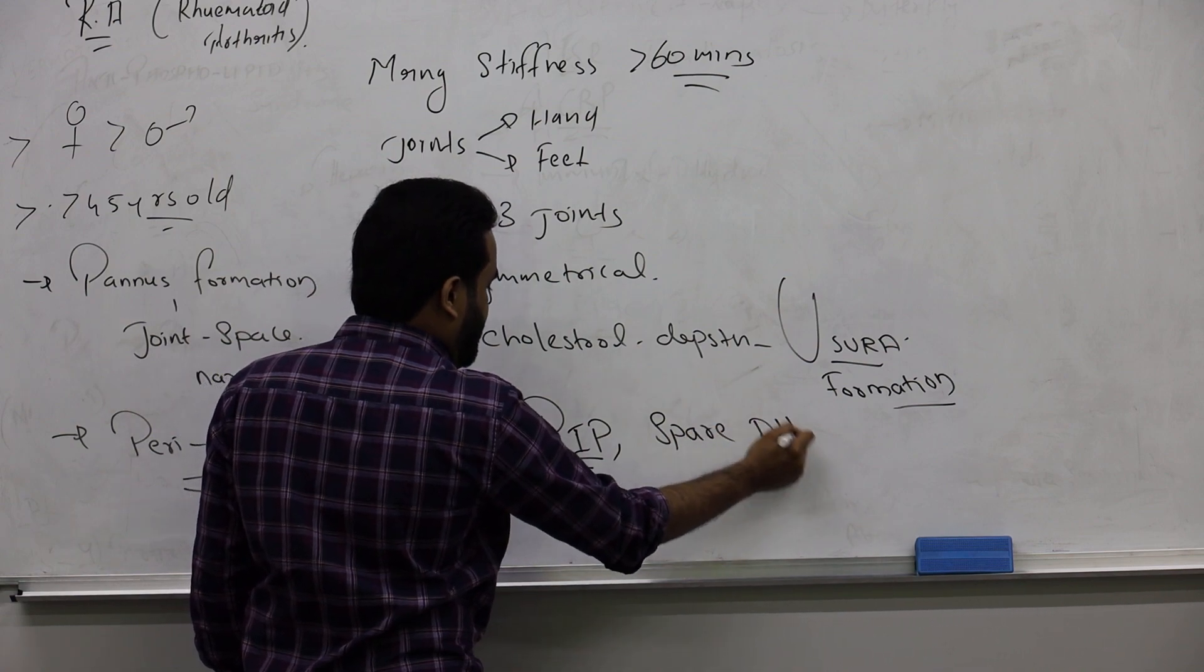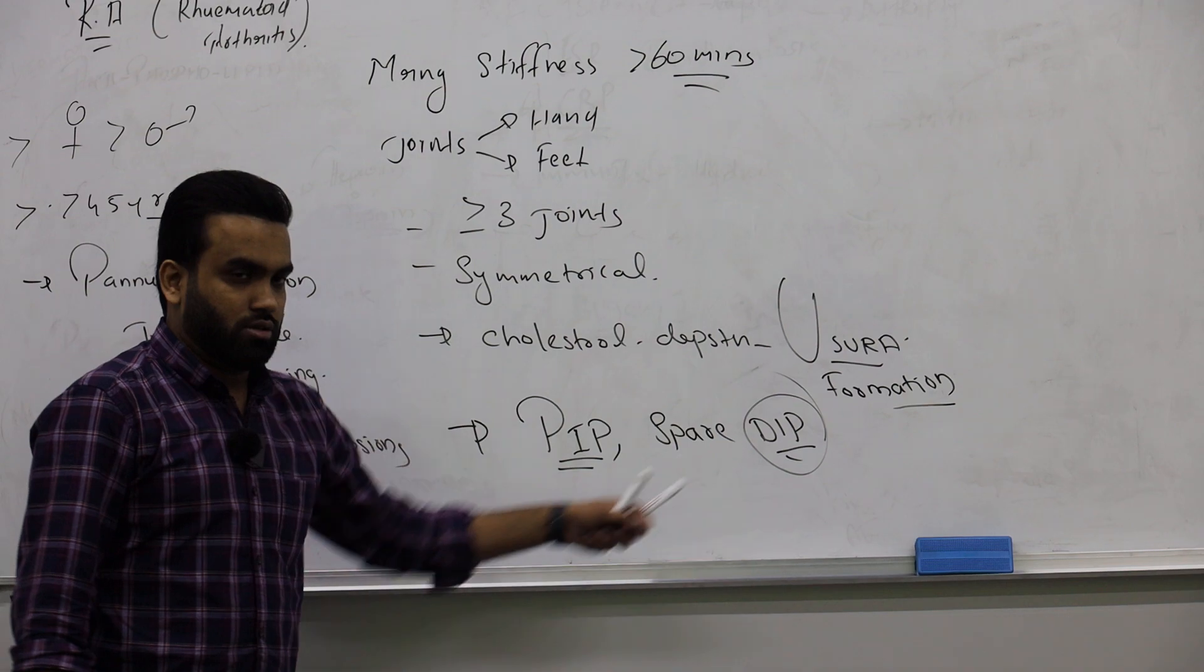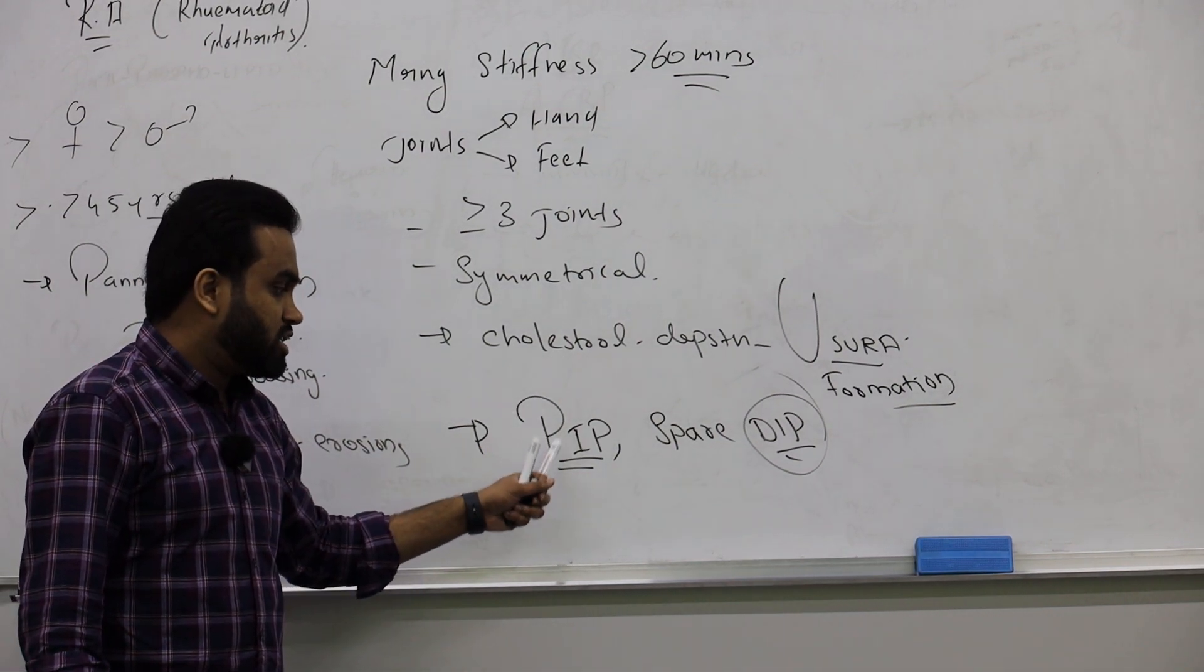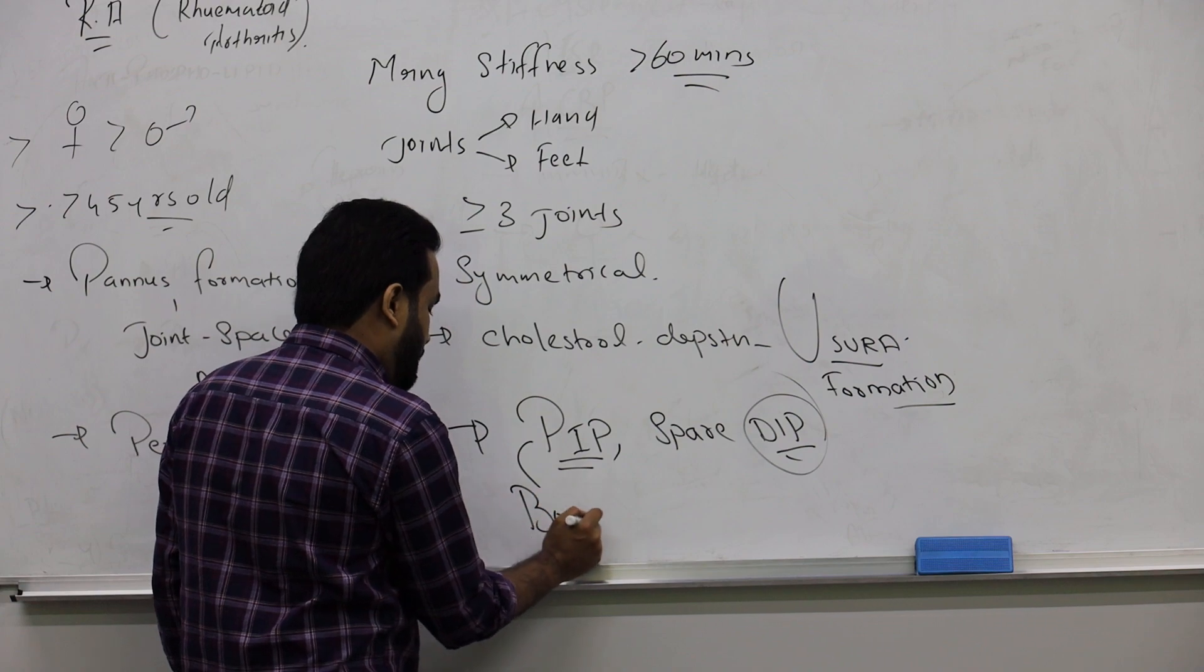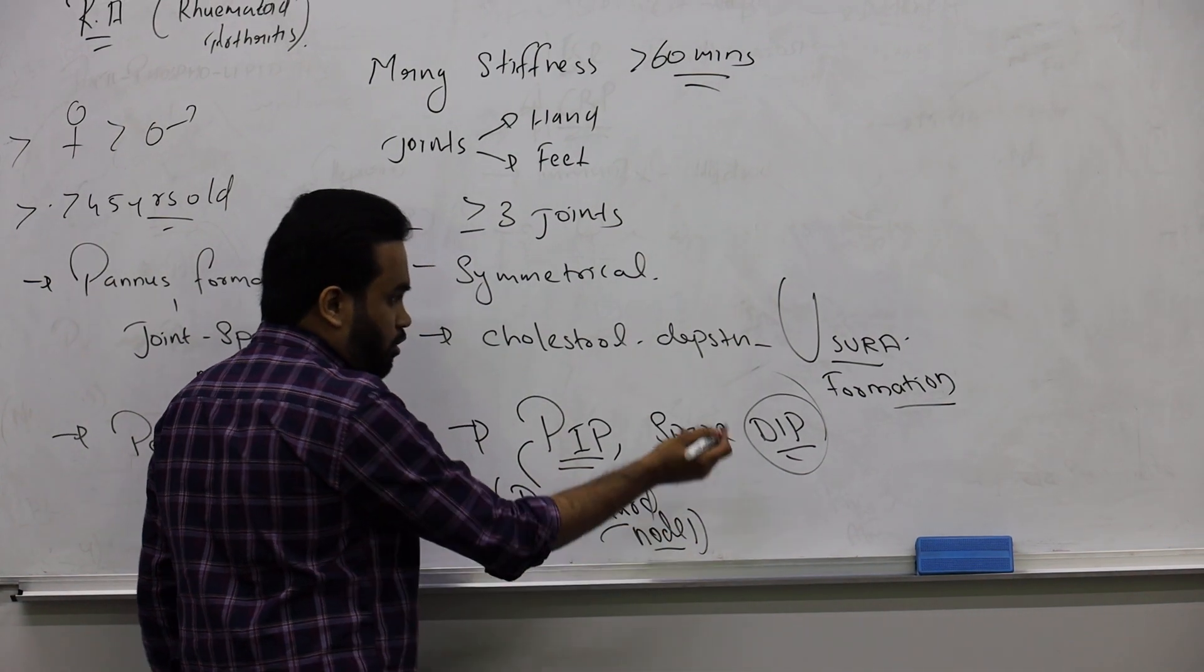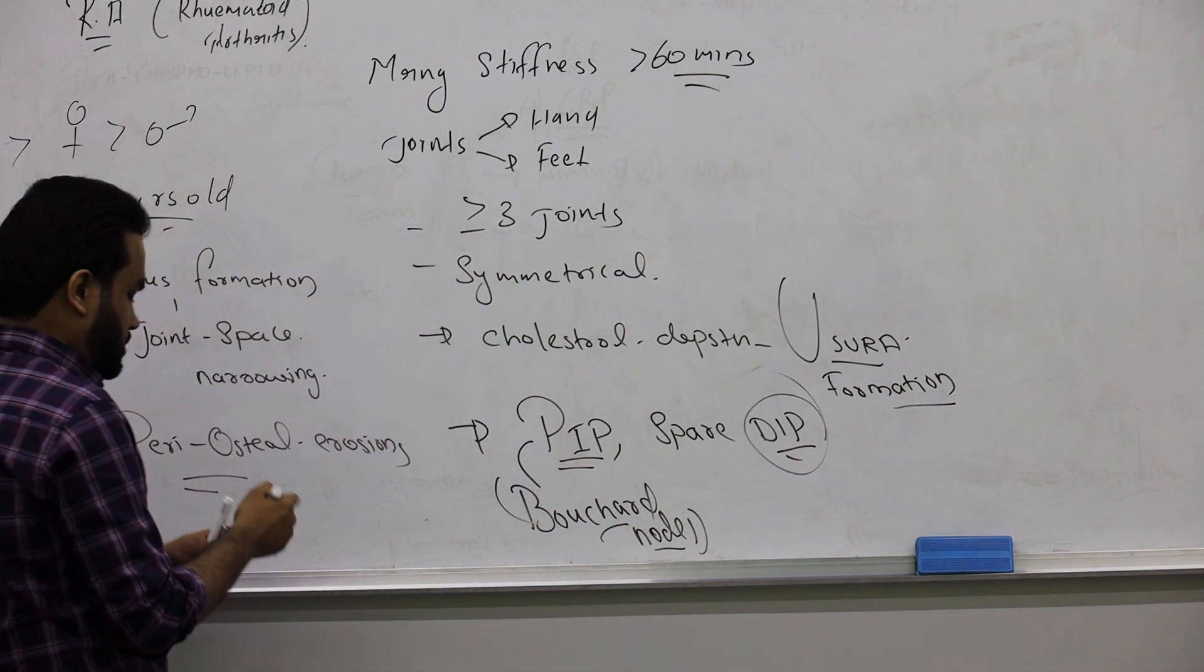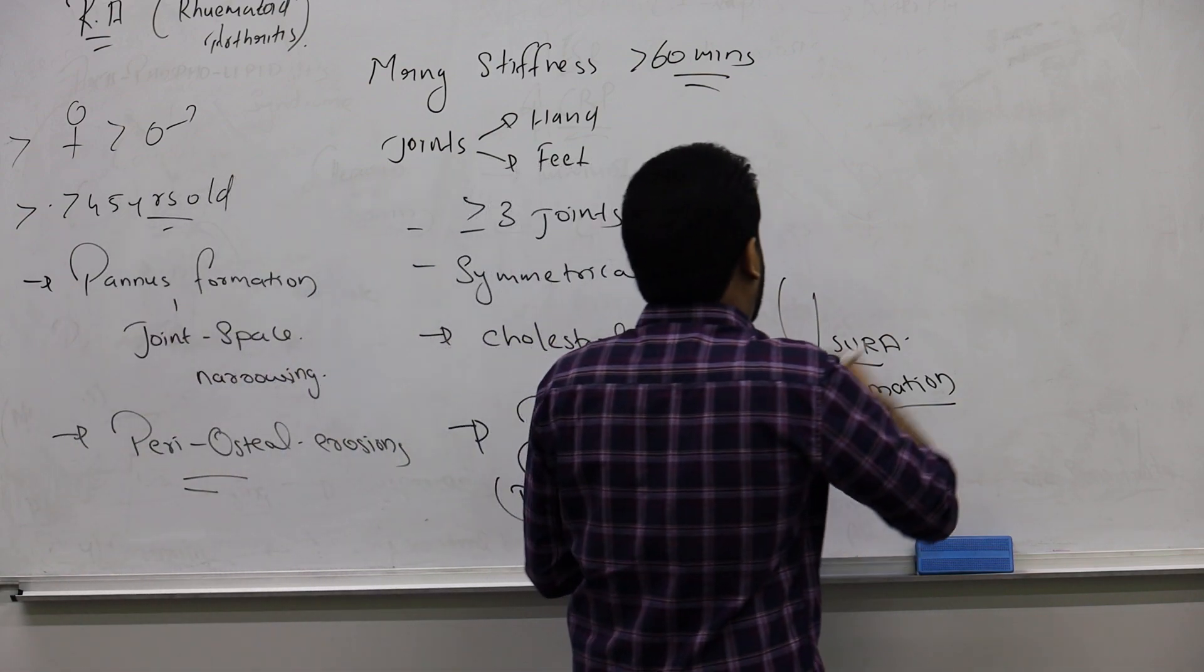Mainly proximal interphalangeal joint. They spare which joint? DIP. Where is DIP affected? In osteoarthritis. But they only affect proximal interphalangeal joint, or you can remember there's a node seen there, Bouchard nodes.